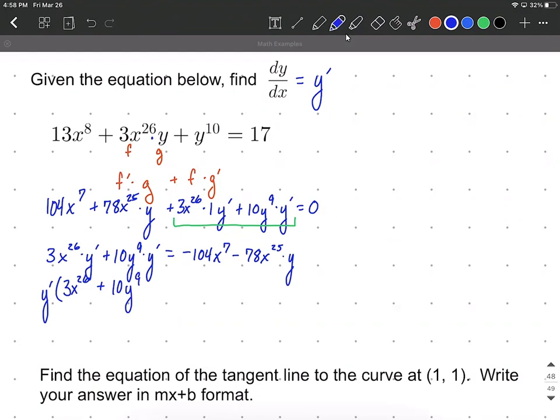equal to the same thing on the right-hand side, negative 104x to the 7th minus 78x to the 25th times y. All right, now that we have y prime multiplied by something over on the left-hand side, we simply need to divide both sides by what's inside the parentheses. So 3x to the 26th plus 10y to the 9th power.